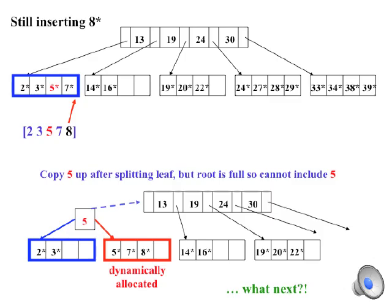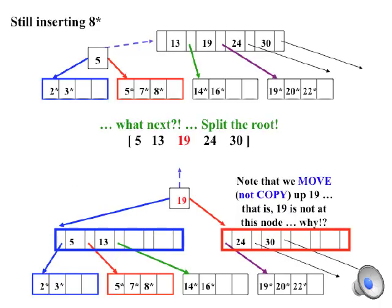The bottom figure shows that we split the original leaf, reusing it, as well as dynamically allocating space for a new node. We copy the five up, but in this case there is no space at the root. The solution is to split the root as shown by the bottom figure.